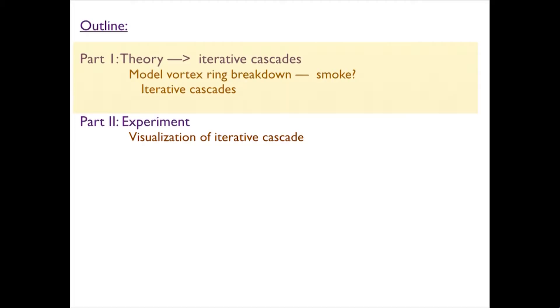This talk has two parts. The first part is theory — I'm going to give you a sketch of theory. What I'm going to tell you about is a mechanism that we invented, which essentially involves iterative cascades occurring during this process. And then I'm going to show you Shmuel and Ryan's experiment, in which they've managed to visualize this in the experiment that I just showed you.